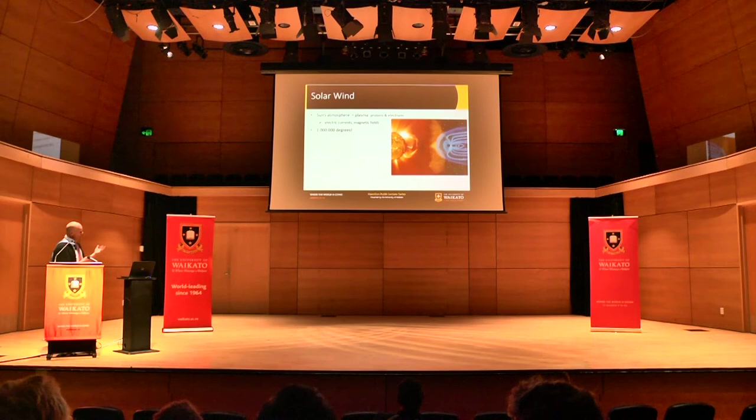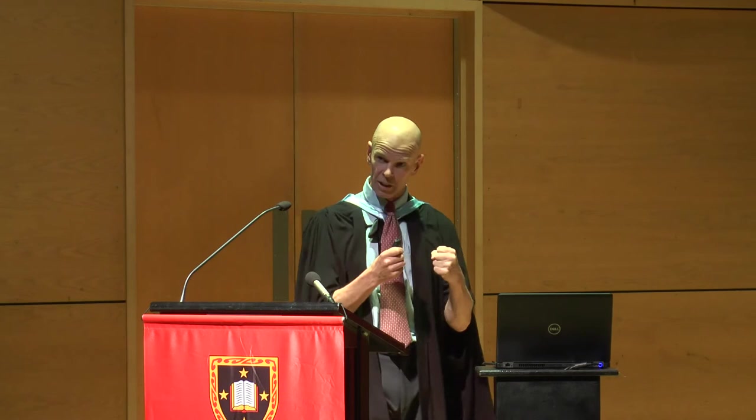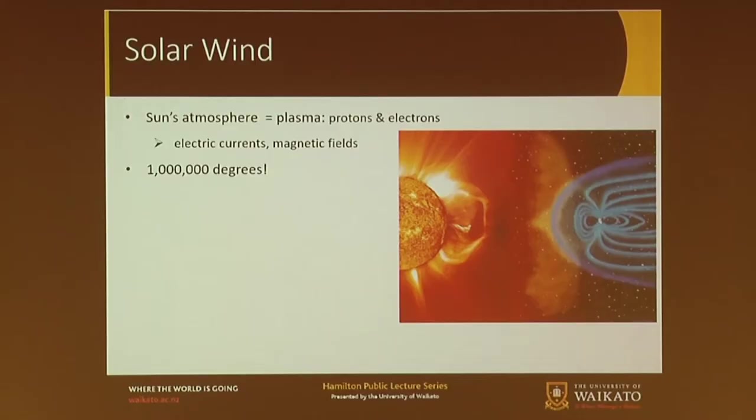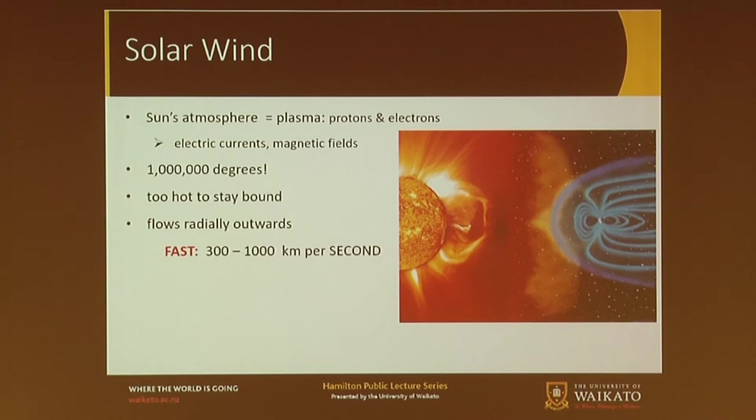The sun's atmosphere is all these protons and electrons separated and moving around, making electric currents and magnetic fields. It's really hot — about a million degrees. In fact, it's so hot that even though the sun has a really strong gravitational field, it's not strong enough to hold on to that atmosphere, and the atmosphere streams outwards through the solar system. It does that fast — 300 to 1,000 kilometres per second, not per hour, per second.